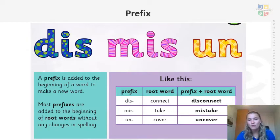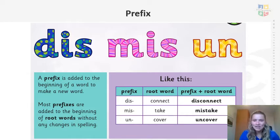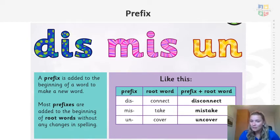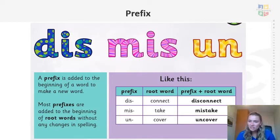And finally, with the prefix un, we've got the root word cover. So if you cover something up — if you are hiding in a den you might cover your den up with a piece of material — and if we put un before the root word, if we uncover, that is the opposite, so that will be taking the cover off. So we can see that using a prefix can change the meaning of a word — it can make it mean the opposite.